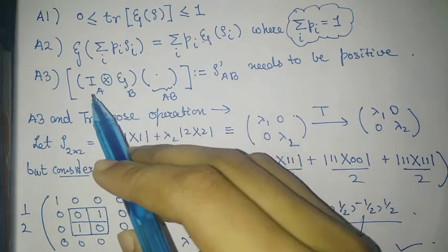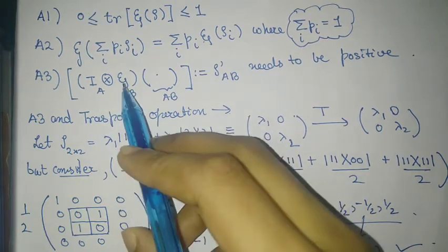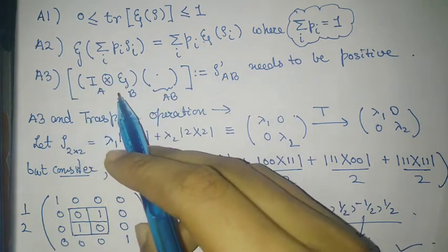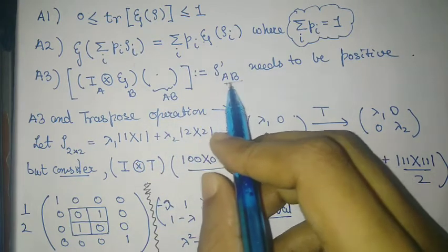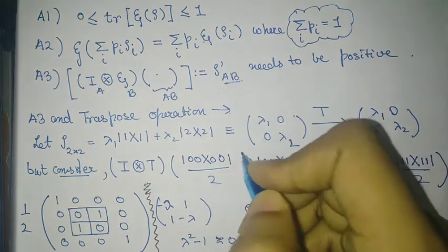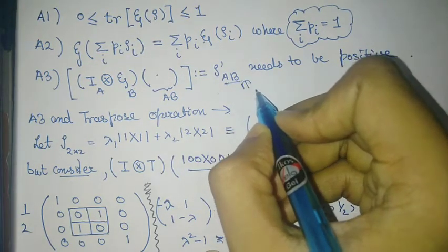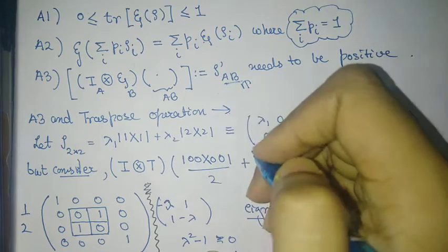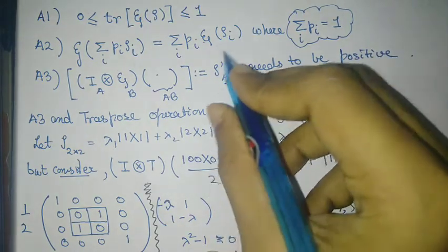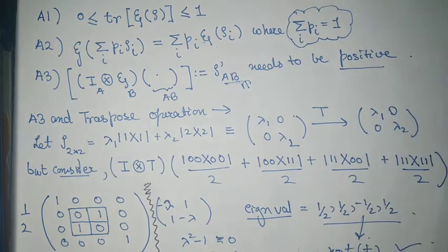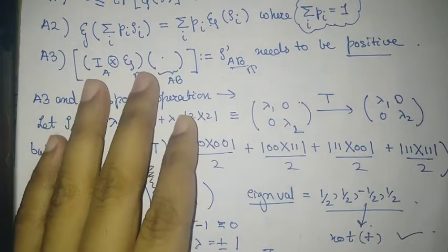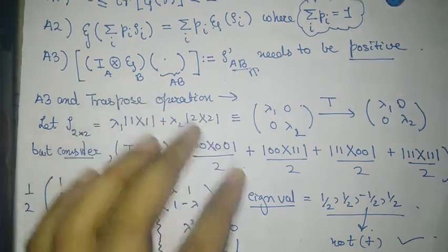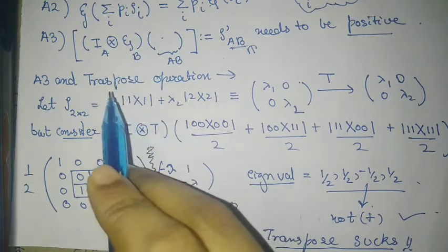When the operation ε is upgraded to act on the tensor product space H_A ⊗ H_B, the result must always be a valid density matrix in the larger Hilbert space — meaning it must be positive. The key point is that ε_B ⊗ I_A must be a positive map. This has the direct consequence that the transpose operation is not completely positive and hence cannot be regarded as a quantum operation.